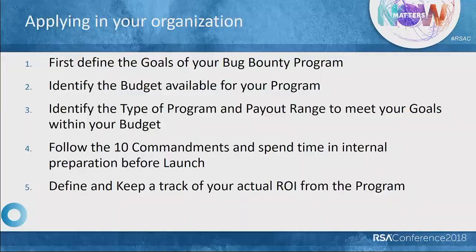To recap: if you are planning to launch a bug bounty program, first define what you want to achieve from the program. Number two, identify what budget you have, because that is going to impact a lot of different things. Number three, use the budget and your goals to identify and implement strategies that can help you achieve those goals. Number four, spend some time planning and look at all the different things we talked about before launching the program. And number five, make sure you identify metrics and keep track of ROI for your bug bounty program as you go along. Thank you.